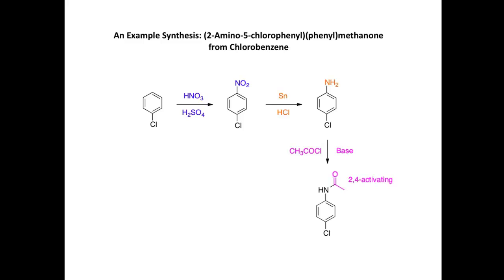Very importantly for the synthesis, this amide group is 2,4-activating. It's a stronger activating group than the chlorine, so this will determine the position of the electrophilic substitution. So we're now going to introduce the ketone side chain in the Friedel-Crafts acylation. Benzoyl chloride and aluminium trichloride reacts with the benzene ring, and the ketone goes in the ortho position with respect to the amide.